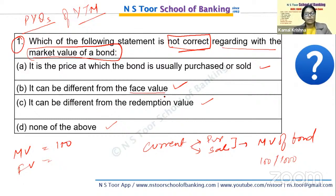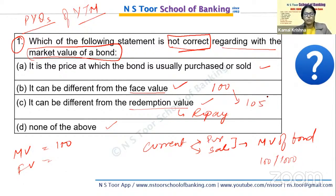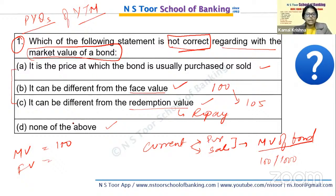Option C: it can be different from the redemption value — yes, this is also true. Redemption value is how much we repay; suppose face value is 100 rupees but we are repaying at premium, say 105, so 5 rupees is premium. So it can be different from market value — same bhi ho sakta hai, lekin alag bhi ho sakta hai. So all statements A, B, C are correct — koi bhi statement not correct nahi hai in teeno mein.